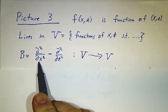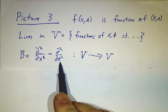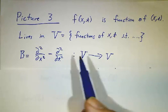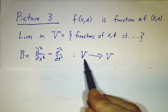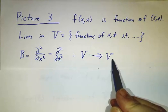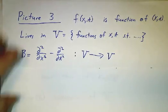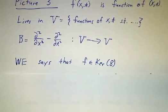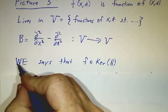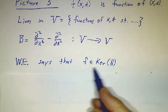which is second derivative with respect to x minus the second derivative with respect to t. It takes functions of two variables and spits out functions of two variables. So it maps from V to itself.